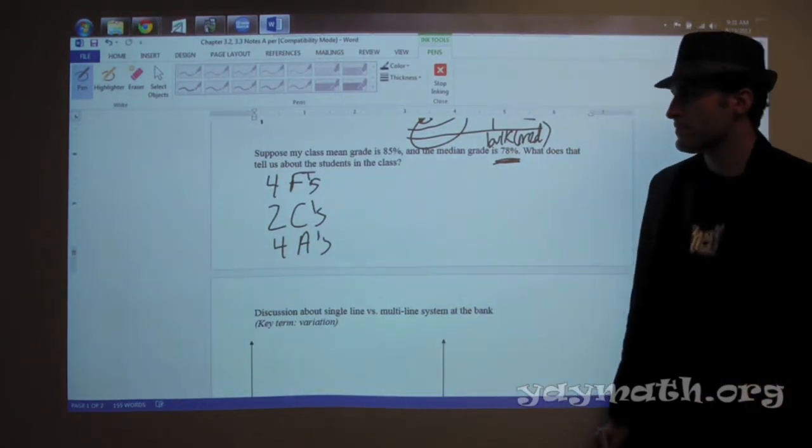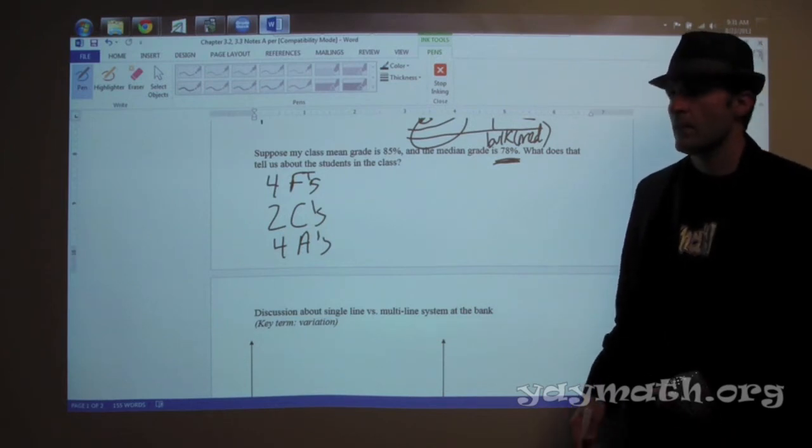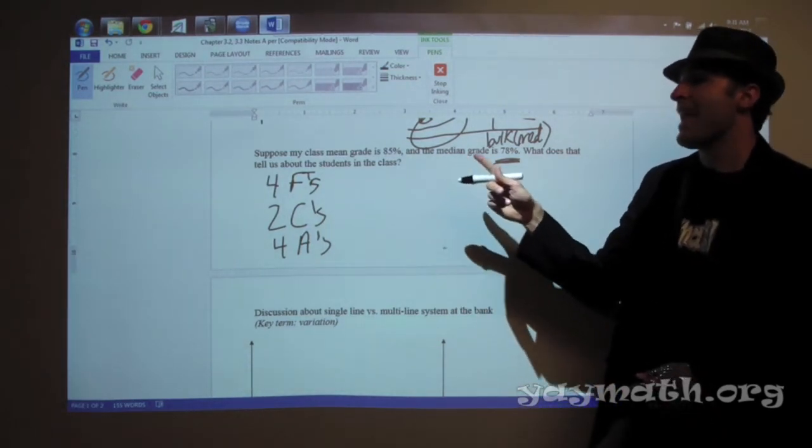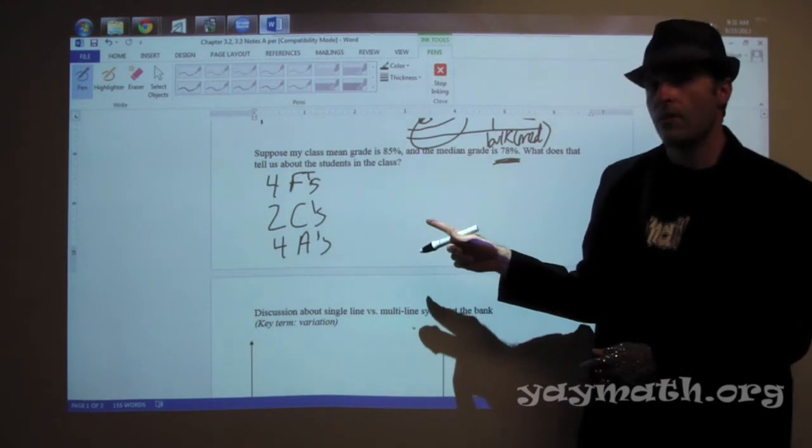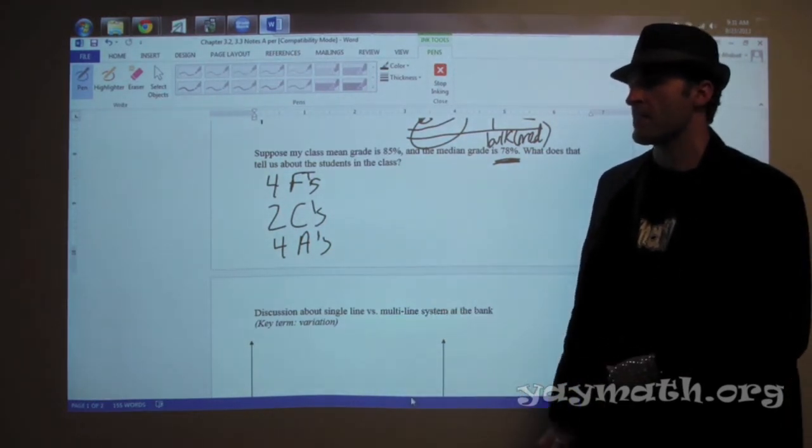Four As. Then when you do the... So extreme highs and extreme lows. But then when you do your median, you'll end up having C. You'll end up having C, but it's not a good... In this case, extreme highs and extreme lows. Cancel each other out. They cancel each other out.